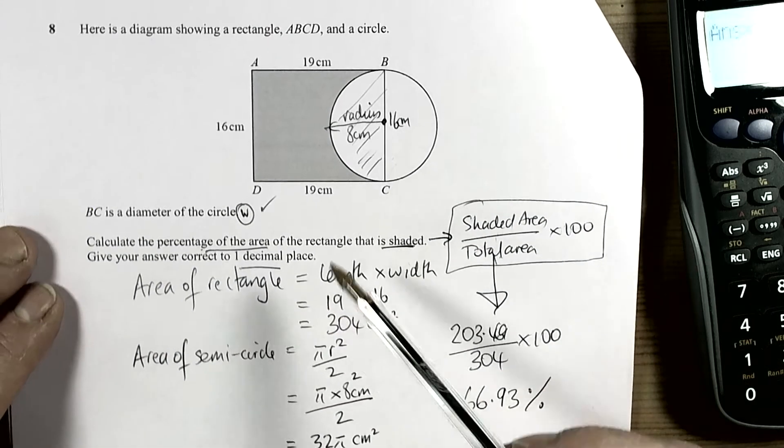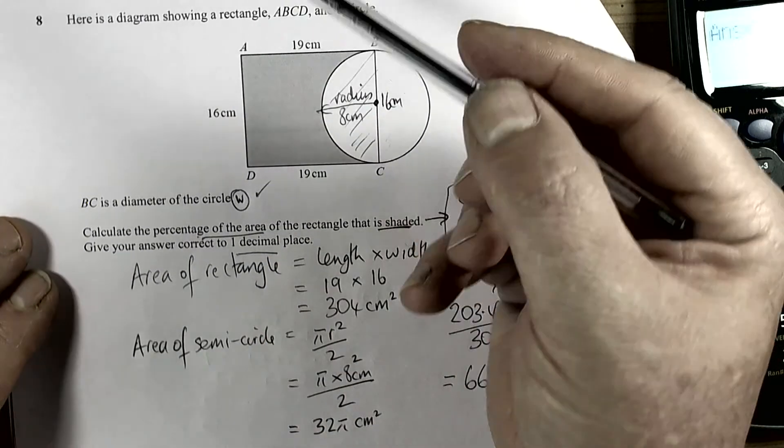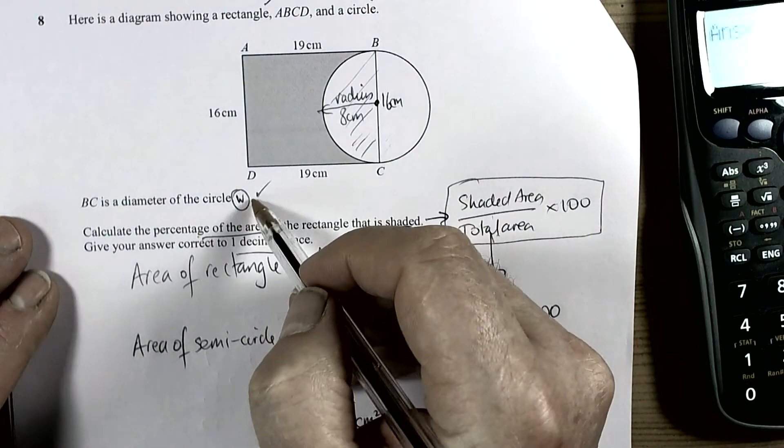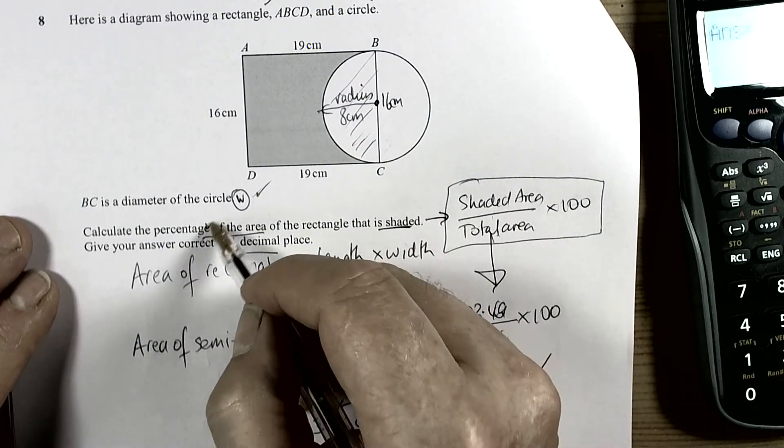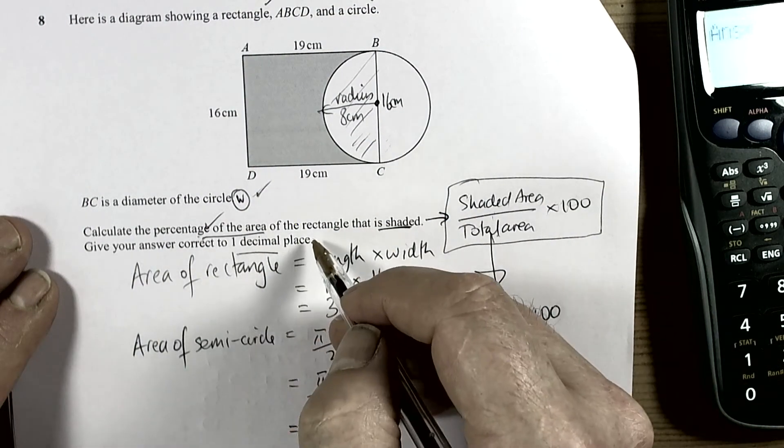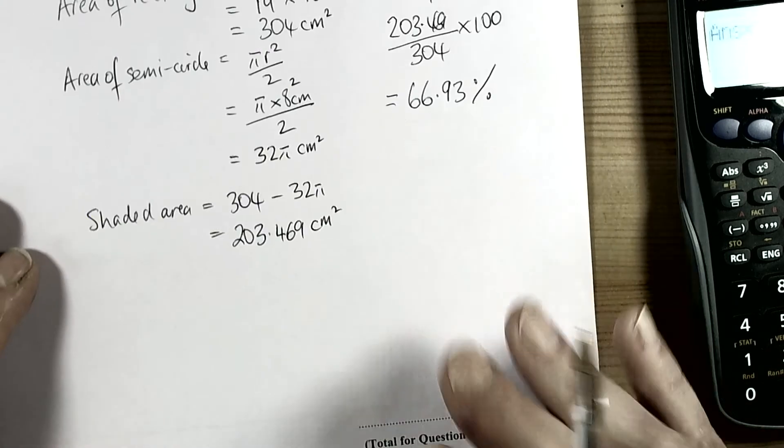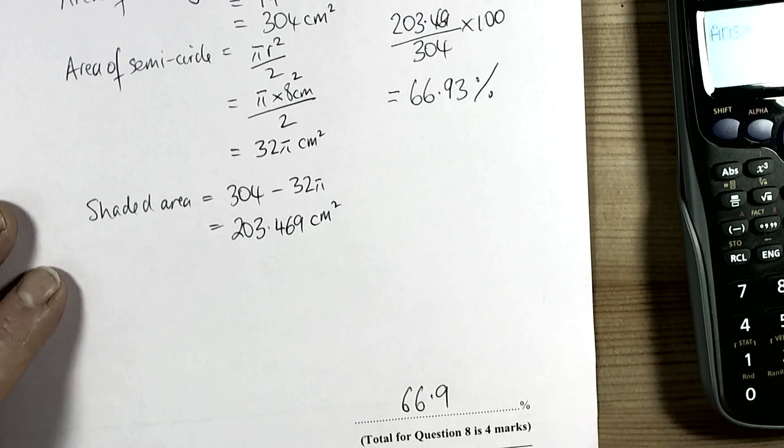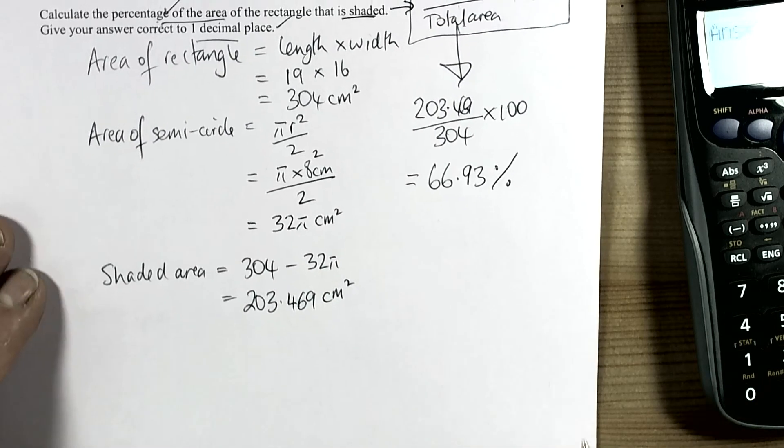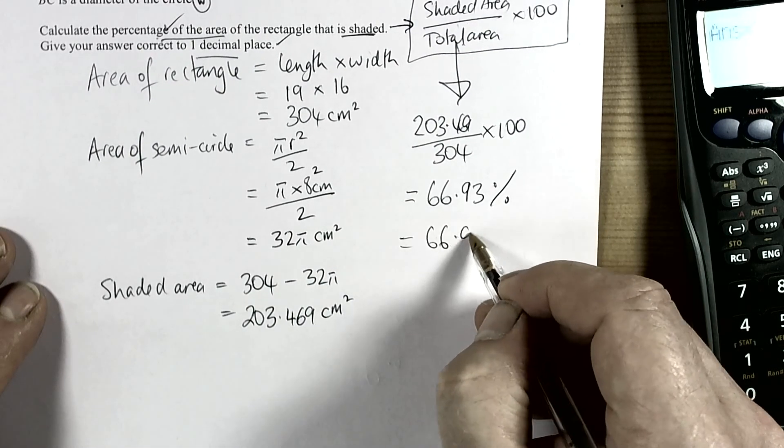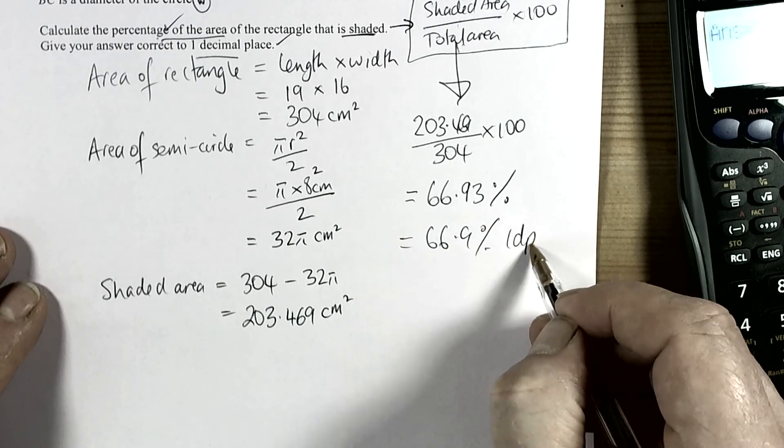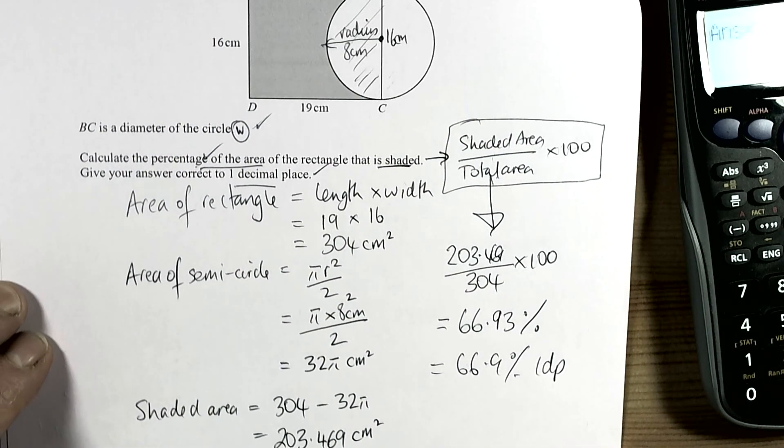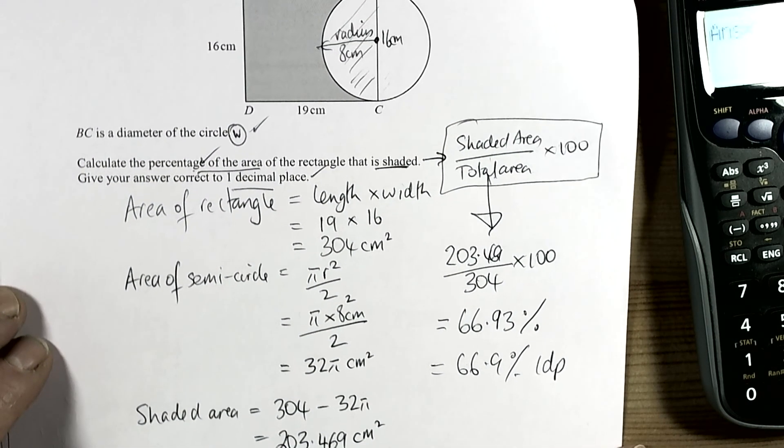And then we go back to the question and check that we've done everything. So we've recognized it's about a rectangle and a circle, we've done the diameter bit, we've done the calculating the percentage. It says give your answer correct to one decimal place. So our final answer line would be 66.9%. So 66.9% to one decimal place. That's how that question could have been done.